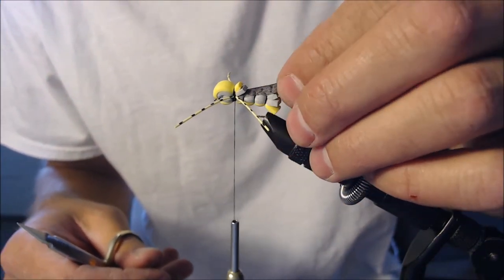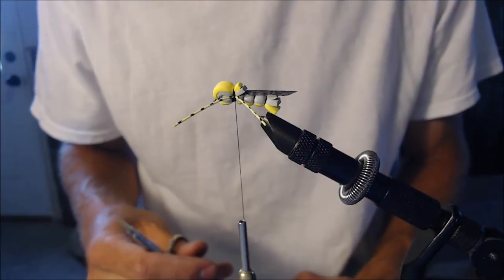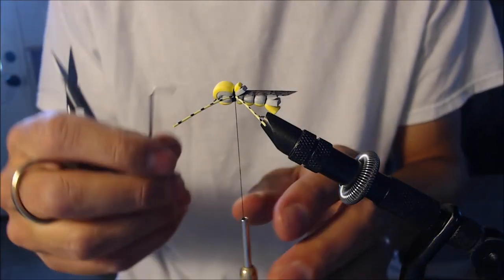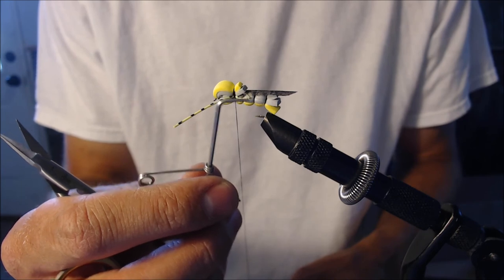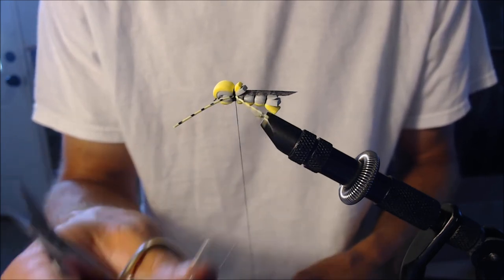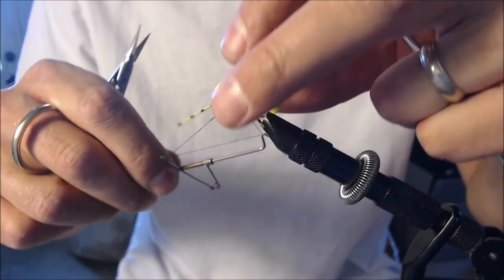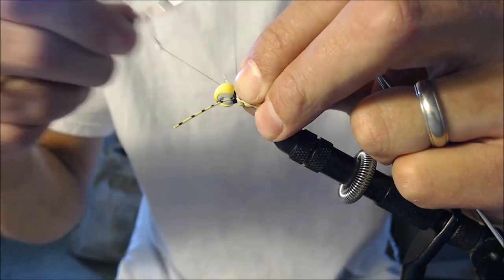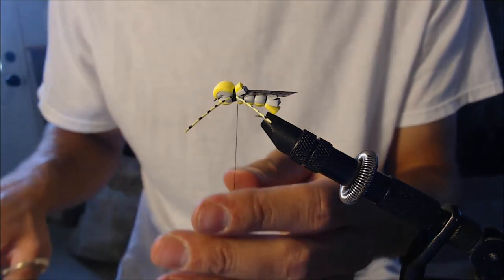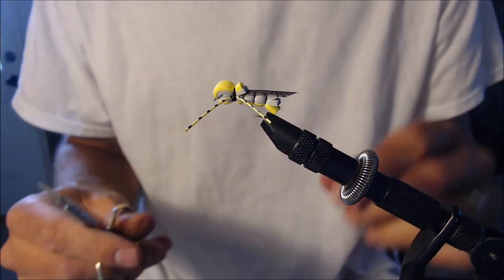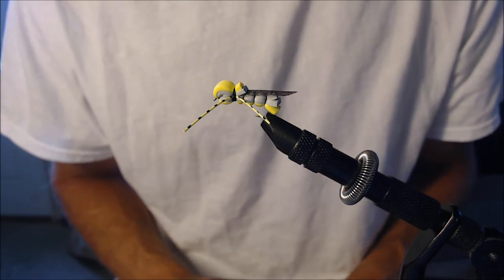All right, last step is to whip finish this thing and we're done. Pretty simple fly. You can get more creative with the legs if you want. Sometimes I'll tie this back one, I'll cut it a little longer and then I'll tie it in a knot so it looks like the long jumping legs of a grasshopper. But sometimes when I do that I notice the fly doesn't sit quite as well in the water, so I prefer to leave them just the way they are. Whip finish the fly and snip it. So there it is, a little yellow and gray kind of a triple decker foam grasshopper.